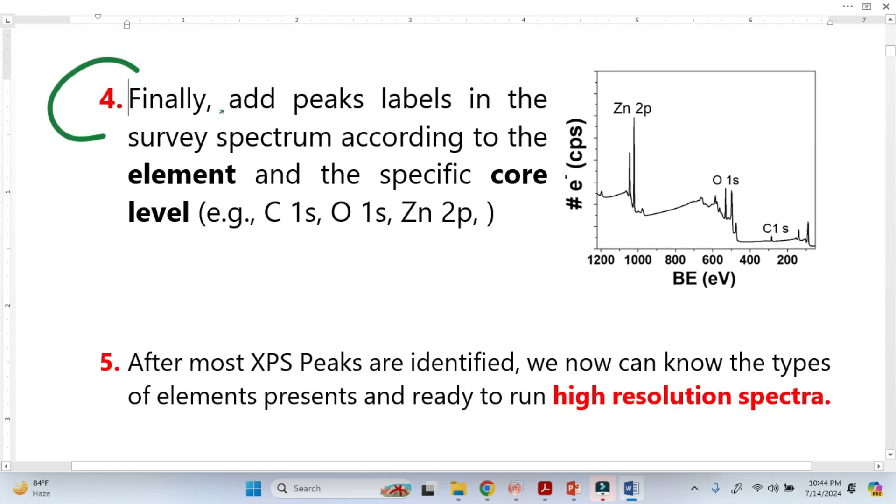So now in step four, as I mentioned, from binding energy tables we are able to identify the elements. So now just give the names: that this peak was from zinc, and that peak was from oxygen, and this peak from carbon.